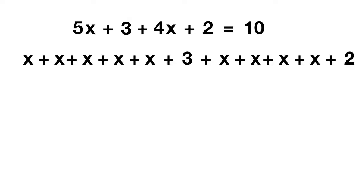If you count out the total number of x's, you get 1, 2, 3, 4, 5, 6, 7, 8, 9. We could just write that we have 9x. This makes sense — we had 5 x's and we added 4, and 5 plus 4 gives us 9.